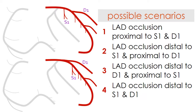Occlusions of the LAD can be localized at four important levels. First, occlusions that are proximal to both the first septal and the first diagonal branches. Second, occlusions that are distal to the first septal branch but proximal to the first diagonal branch.